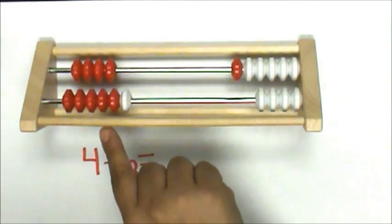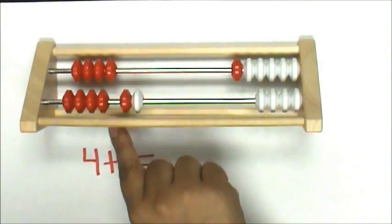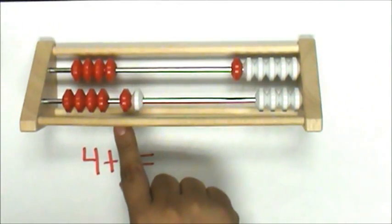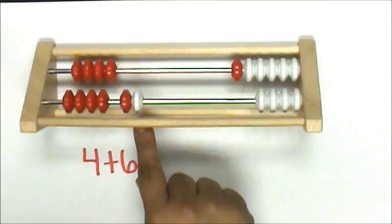When I look at my rekenrek, I can see 8. 4 and 4 is 8, and 2 more: 9, 10.